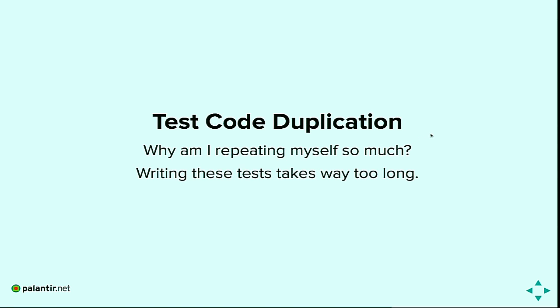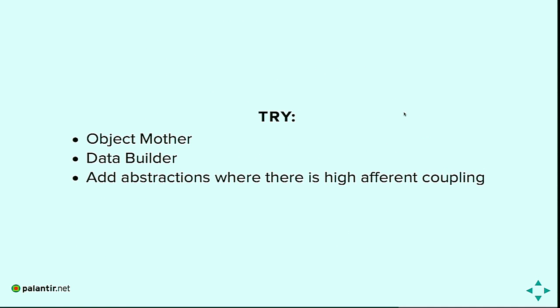Another test smell is test code duplication — realizing you're writing lots of the same code. Many people put duplicated code in the setup method, but that's not always best. If something is true for all possible test methods, fine. But more often you'll get better mileage from object mother or data builder. This might also indicate high efferent coupling: if your class uses many other classes and you have many test methods, you'll have a lot of repetition mocking the boundary of that class.